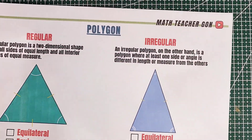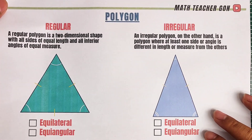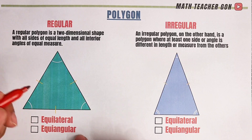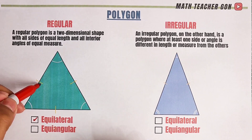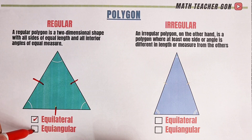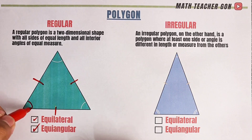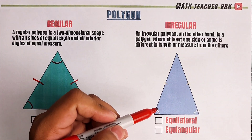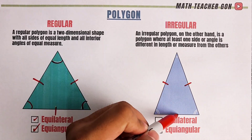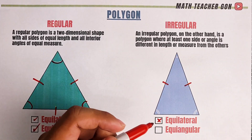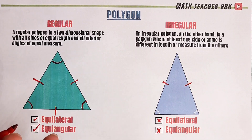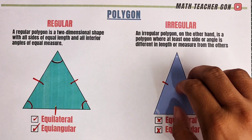Now for you to understand well, let's have these examples with triangles. As you can see, in the first triangle, this one is regular. Why? Because all the sides are equal, and this triangle is also equiangular because all the angles are congruent — regular polygon. For this second triangle, only two sides are equal but the third is not, so it's not equilateral. For the angles, only two are equal while the third is different — it's neither equilateral nor equiangular, so this one is an irregular polygon.